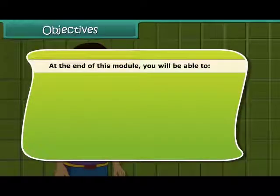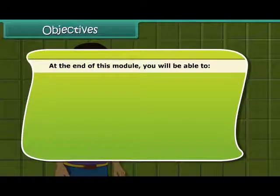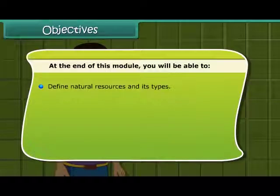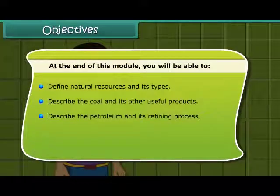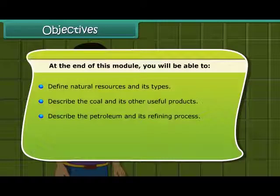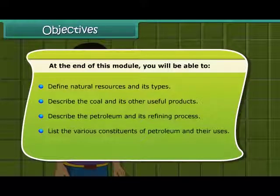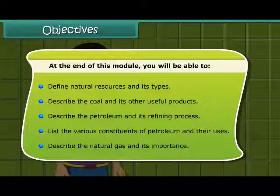At the end of this module, you will be able to: define natural resources and its types; describe coal and its other useful products; describe petroleum and its refining process; list the various constituents of petroleum and their uses; and describe natural gas and its importance.